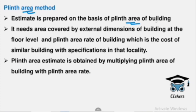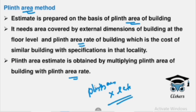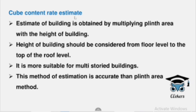In the Plinth Area Method, the building's plinth area is multiplied by the Plinth Area Rate. Plinth Area multiplied by Plinth Area Rate gives us the estimate. The third method is the Cubic Content Method — here we write a cubic area in terms of volume. We call it plinth area in terms of area and cubic content in terms of volume.